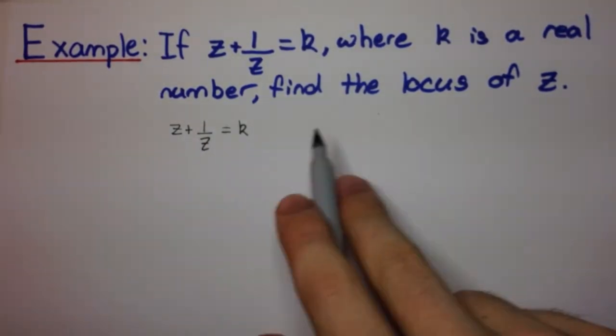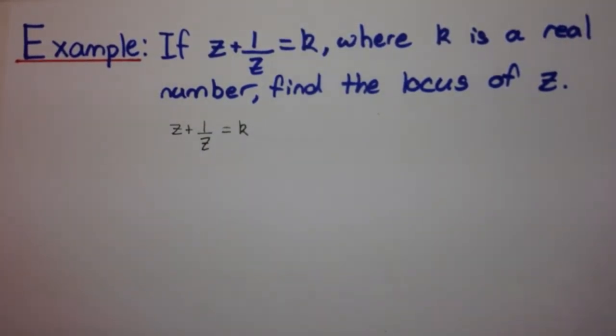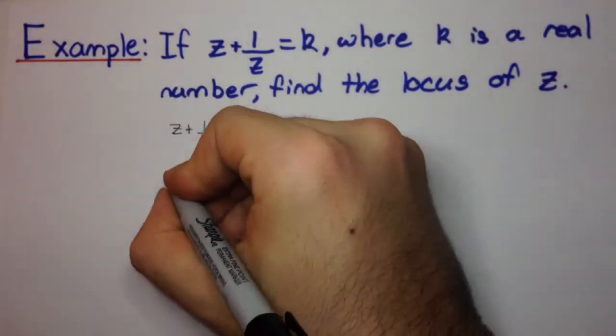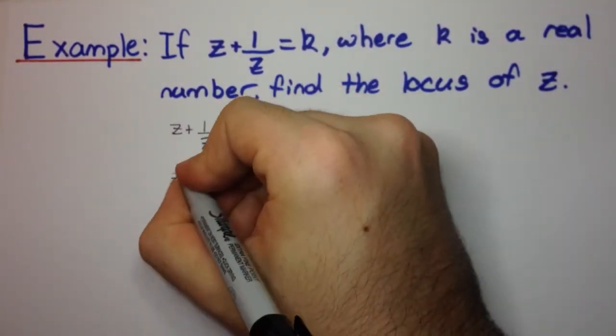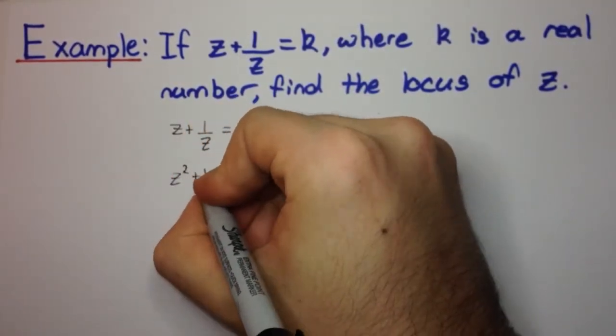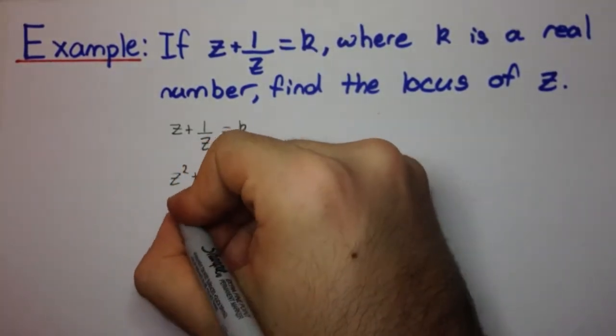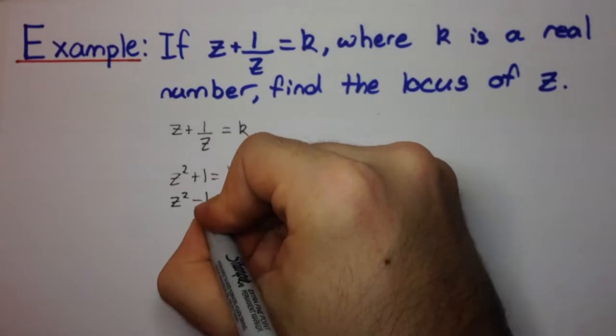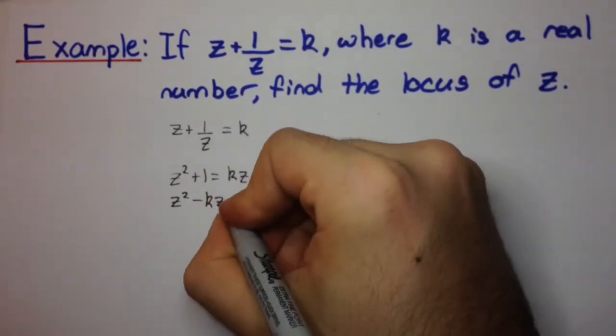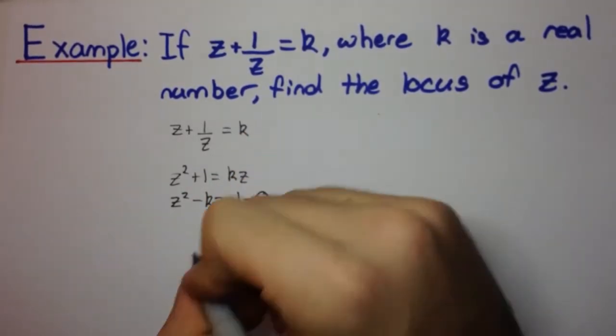Okay, now let's make this into a quadratic in terms of z. So if we multiply it through by z, we get z squared plus 1 equals kz. And then z squared minus kz plus 1 equals 0.